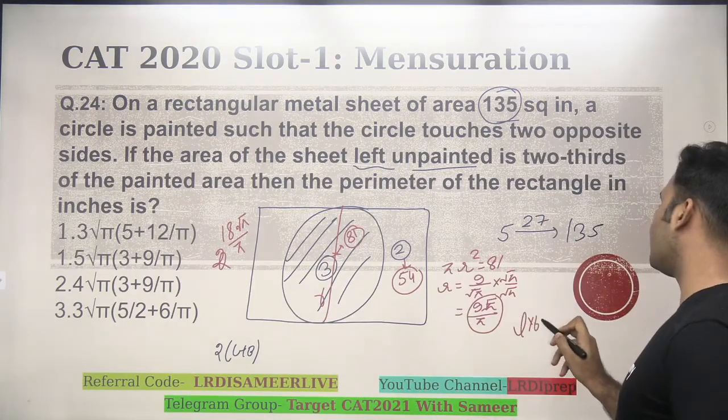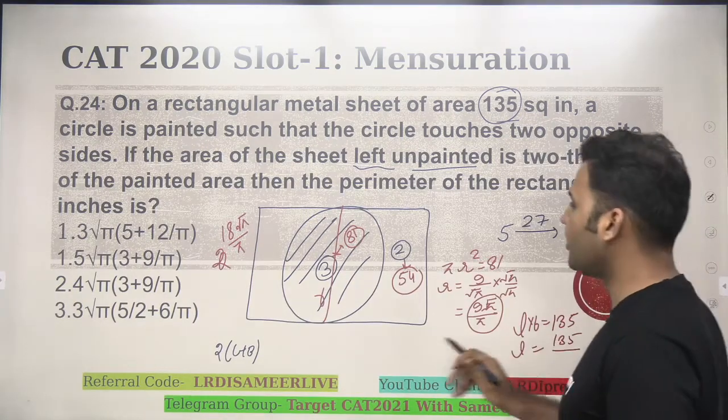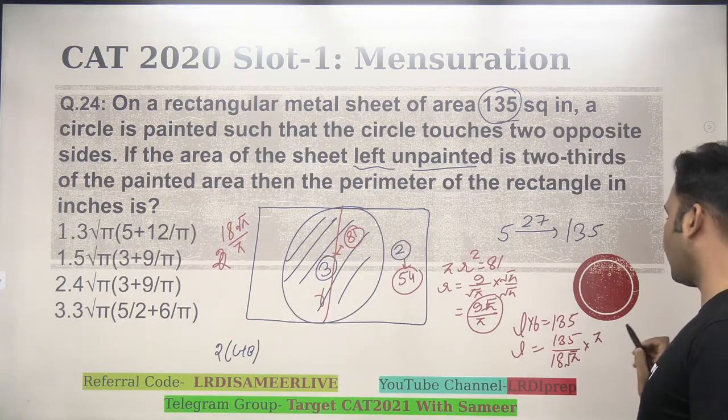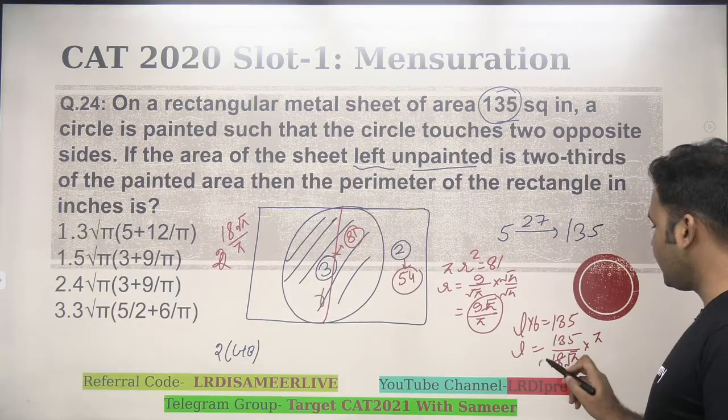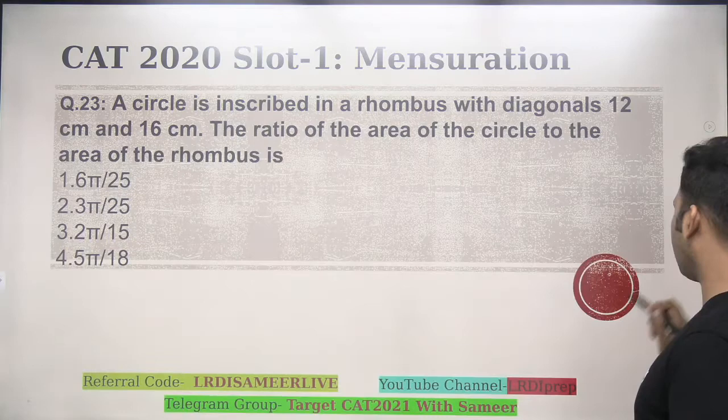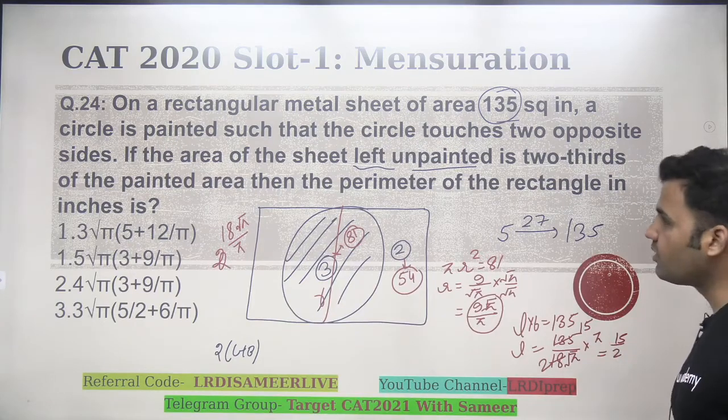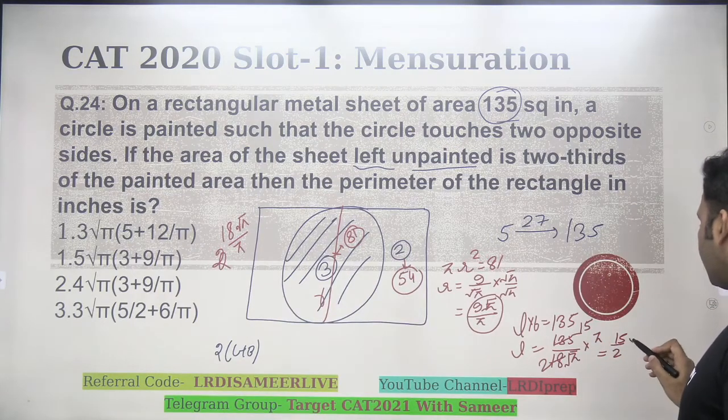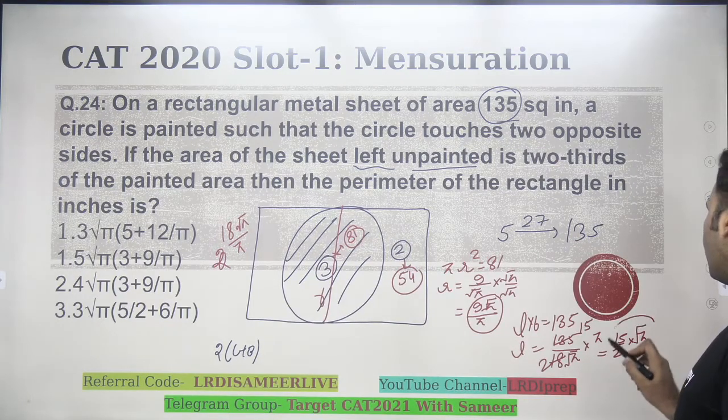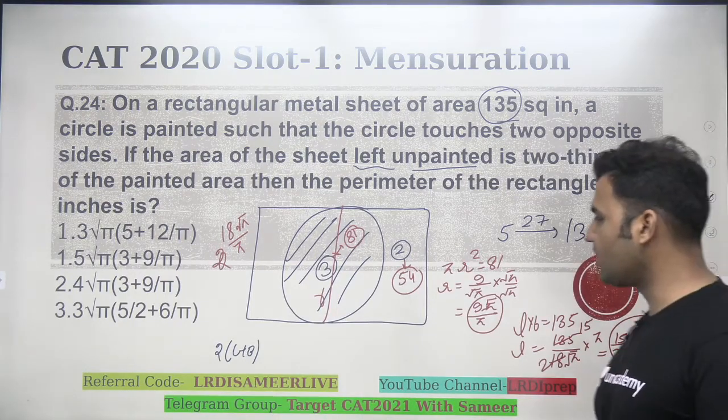Length will be equal to 135 upon this width, which is 18 root pi upon pi, multiplied by pi. 9 into 15, that is 15, so this will be equal to 15 by 2 pi upon root pi, again rationalize it. You will see that this will be 15 by 2 root pi. On rationalizing by root pi, you will get the length is 15 by 2 root pi.